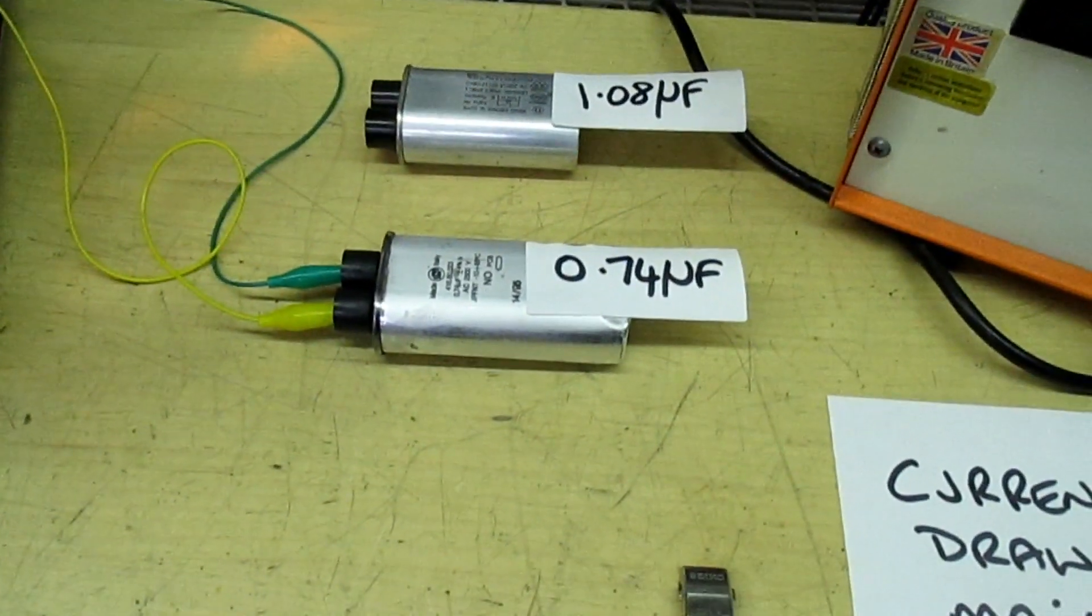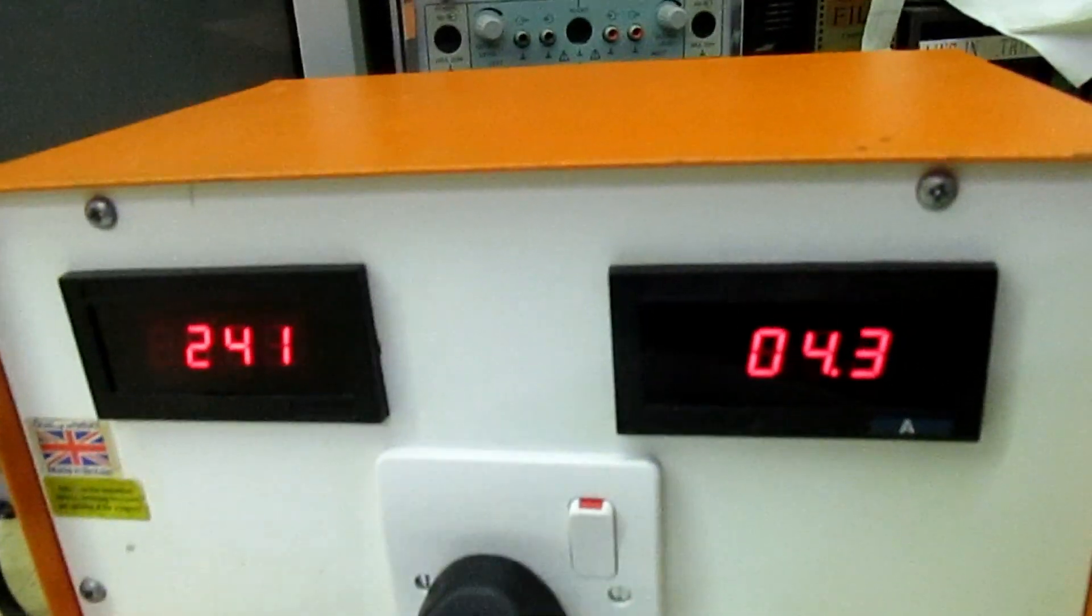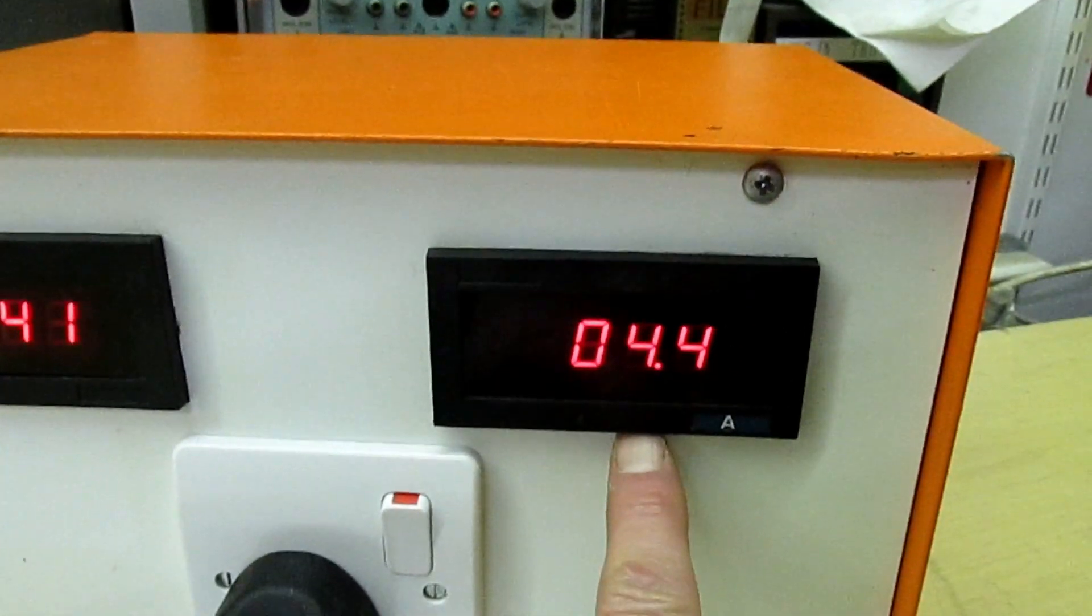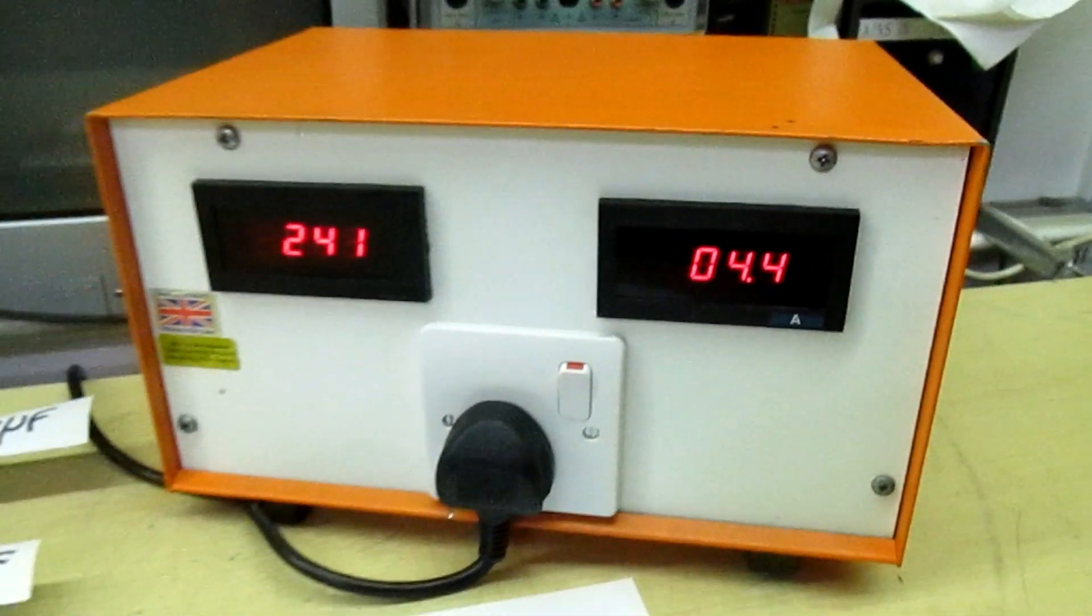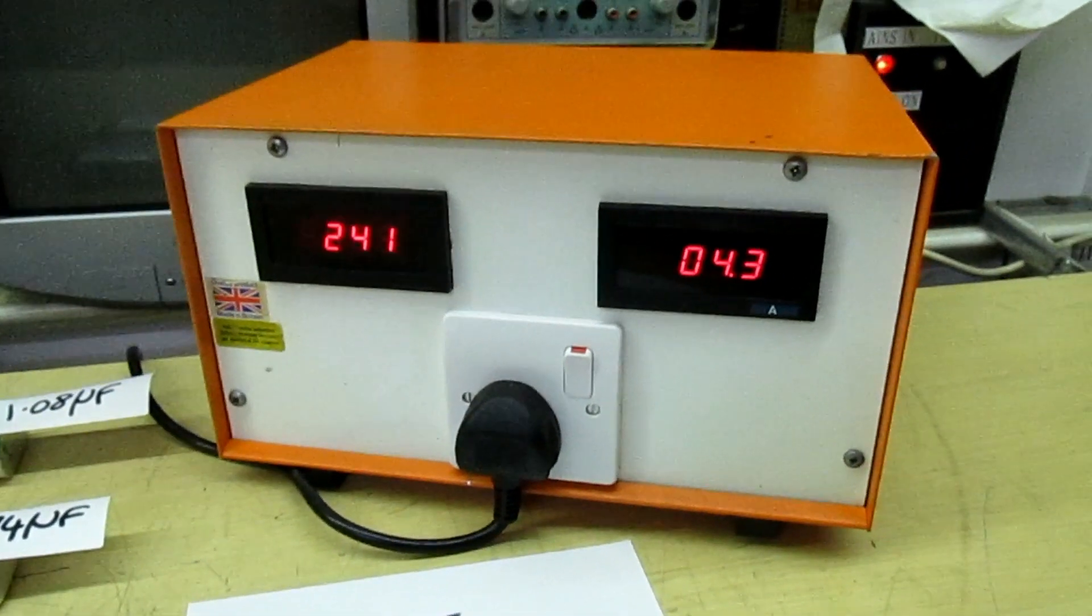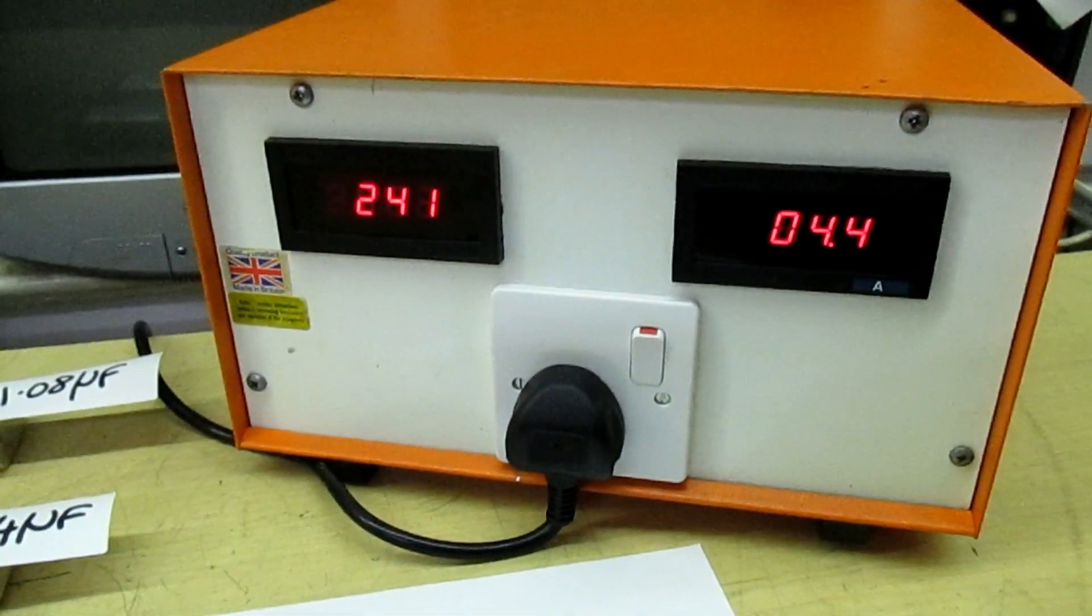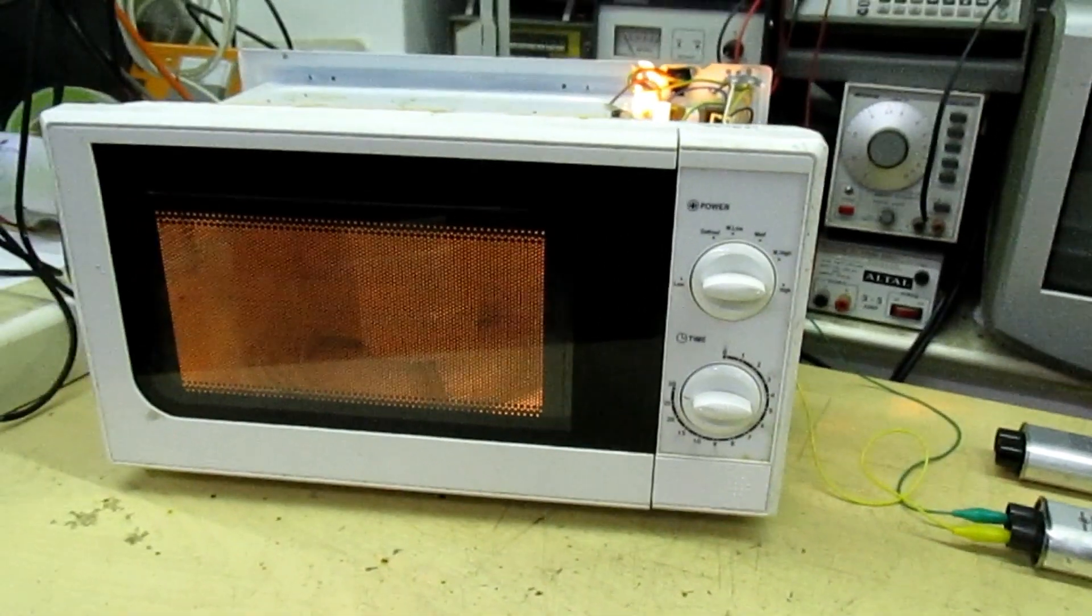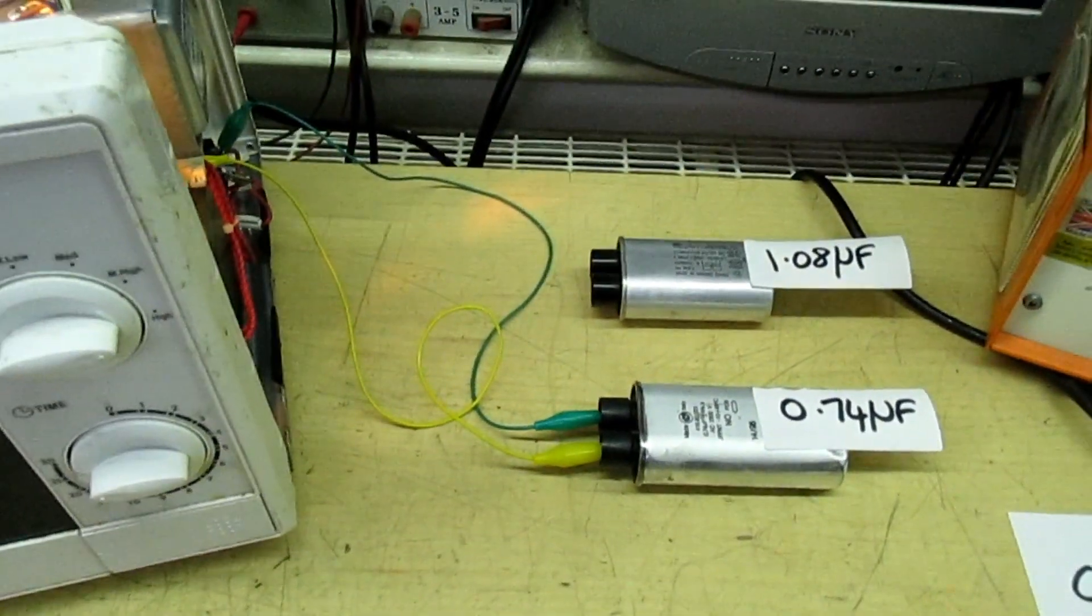Right, so that's with the 0.74 cap. Now, if you look at the current meter there, before we were drawing six amps from the mains. Now we're only drawing 4.4 amps. So you can see how much difference swapping the capacitor for a smaller one has made. We're drawing a lot less current from the mains, which means this microwave now will probably run from a thousand watt inverter, where with the bigger capacitor in it, it wouldn't run from a thousand watt inverter.